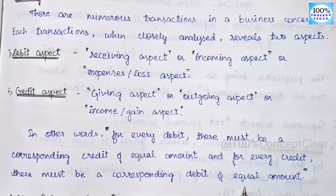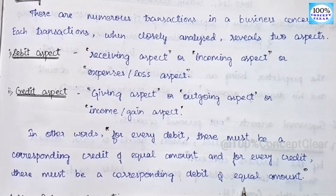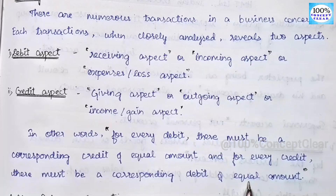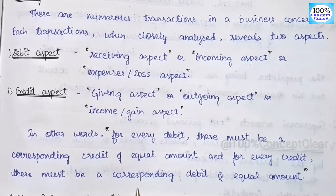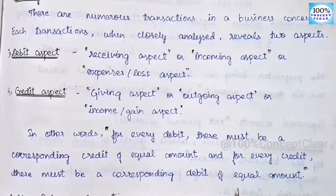Equal amount is the amount. So we are going to specify one debit and one credit — corresponding debit and credit of equal amount. So this is the double entry system and this is the meaning.